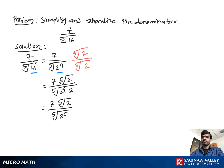And then we have 7 times 5th root of 2 over 2. We cannot further simplify, so this is our final answer.